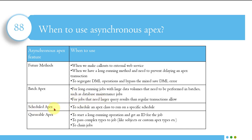For scheduled apex, use it to schedule an apex class to run on a specific schedule. For example, if I want to run a job daily or monthly — say, to check for opportunities that haven't been closed in more than 90 days with no activity and automatically close them — I can write an apex class and schedule it. We'll discuss more about scheduling in future videos.